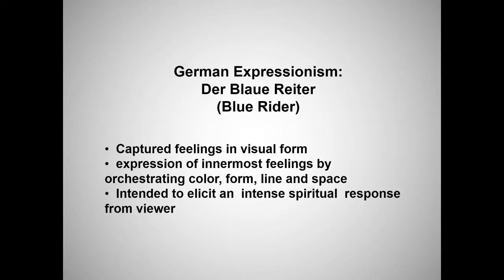Der Blaue Reiter was formed in 1911 in Munich as a loose association of painters led by Russian immigrant Vasily Kandinsky and German native Franz Marc. They shared an interest in abstract forms and prismatic colors — the colors of the rainbow — which they felt had spiritual values that could counteract the corruption and materialism of their age. The name Blue Rider emerged from Marc's enthusiasm for horses and Kandinsky's love of riders, combined with a shared love of the color blue. For Kandinsky, blue is the color of spirituality — the darker the blue, the more it awakens the human desire for the eternal.